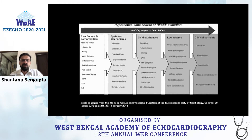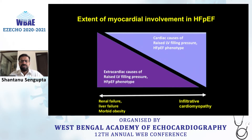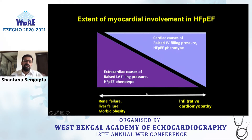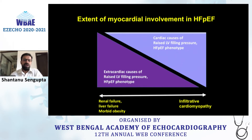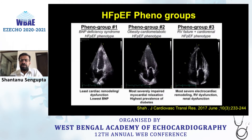Heart failure with preserved ejection fraction can have varied myocardial involvement. There can be isolated cardiac involvement — classically seen in infiltrative cardiomyopathy — where the primary problem in the heart causes raised LV filling pressures. However, the heart can also get involved secondarily through primary involvement of other organs, such as isolated renal problems, liver failure, or obesity. This is an extracardiac cause of the HFpEF phenotype. It is very important that whenever we give a diagnosis of HFpEF, we understand the actual mechanism, because treatment will differ.